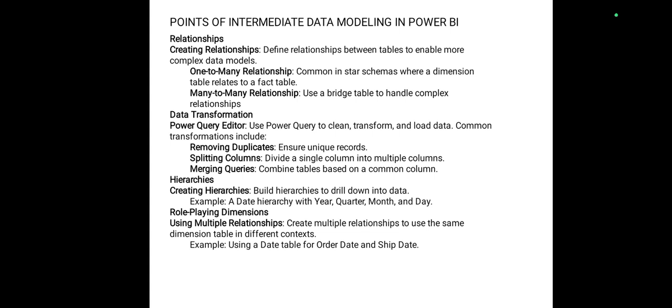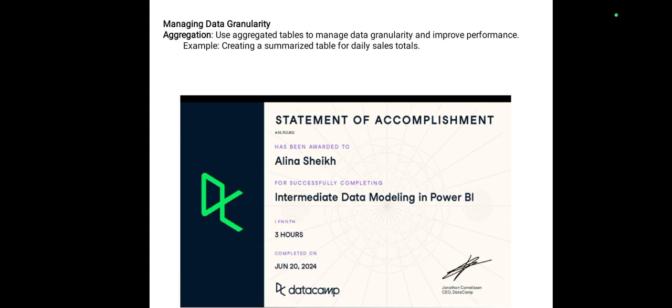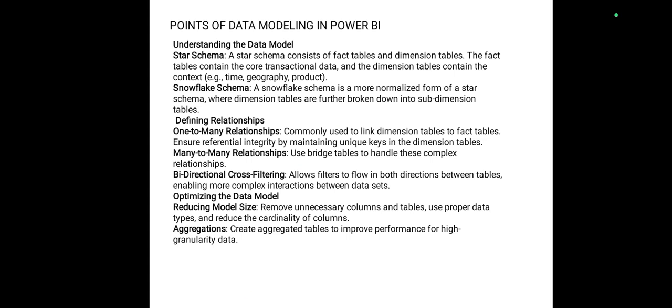Relationship types in Power BI include one-to-many relationships and many-to-many relationships. Data transformation is handled in the Power Query Editor, including removing duplicates, splitting columns, merging columns. Role-playing dimensions use multiple relationships. Data modeling covers understanding data models, star schema, snowflake schema, and defining relationships including one-to-many, many-to-many, and bi-directional cross filtering. Optimizing the data model and reducing model size are also covered.